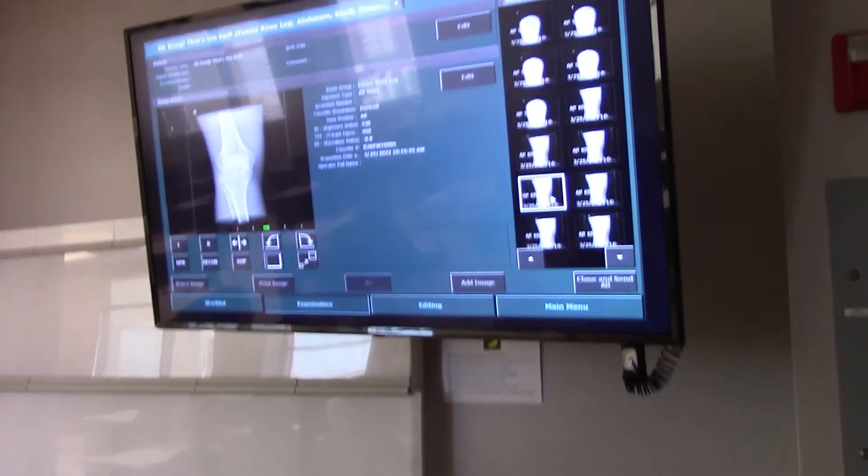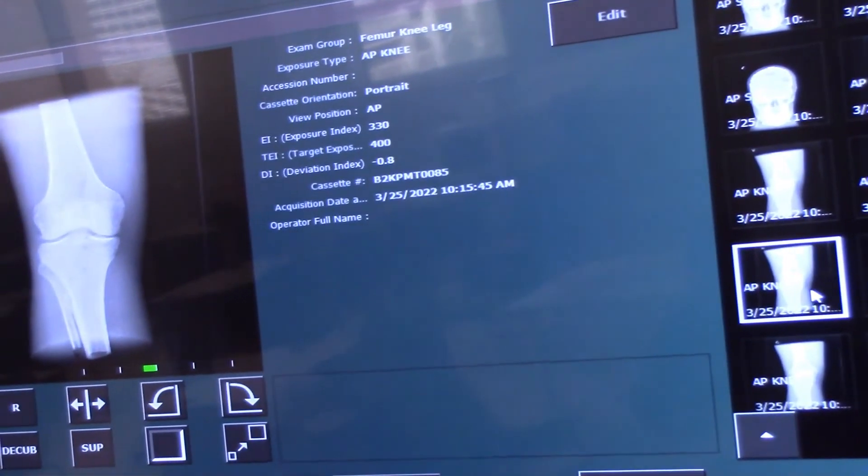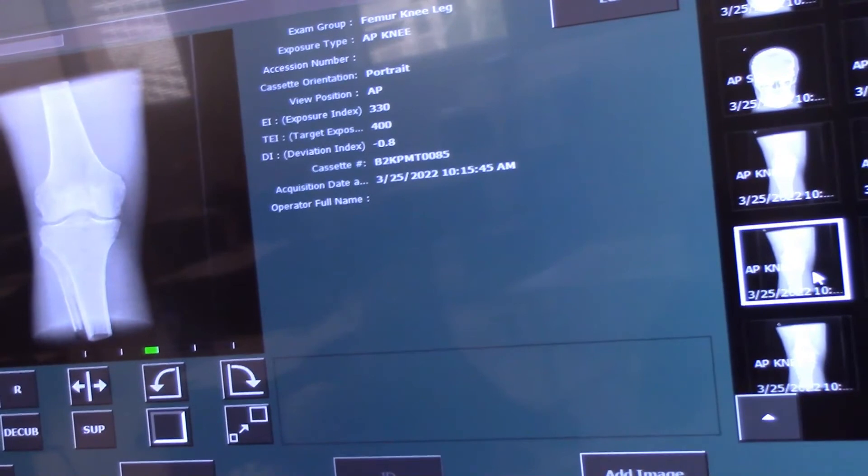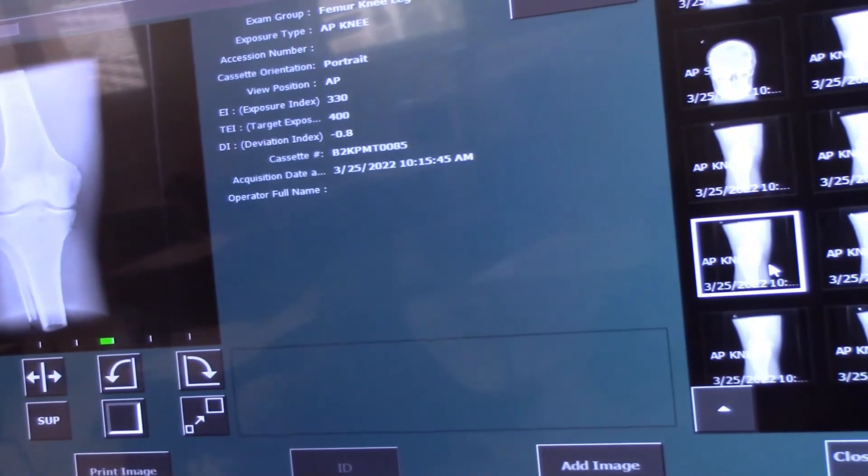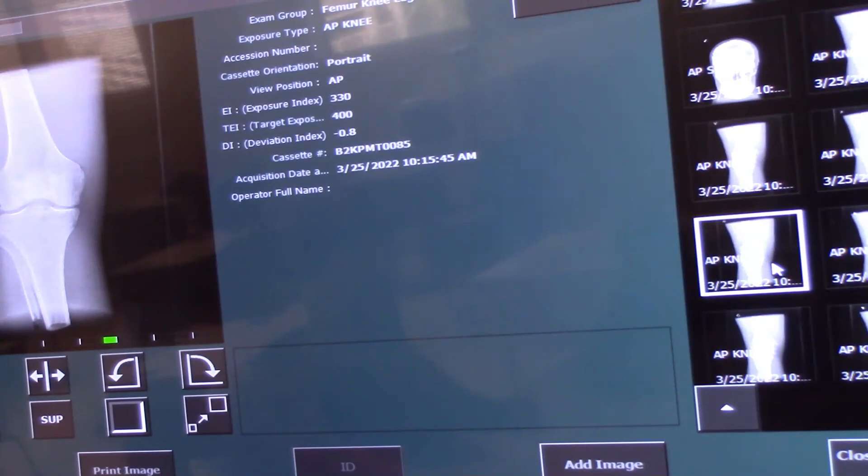Some of our knees were way overexposed and some were way underexposed. This one was the best one we had and it had a deviation index of negative 0.8. What was the technique on this? This was 58 kVp at 6.2 mAs. So that's going to be our jumping off point. We're going to make this our baseline.